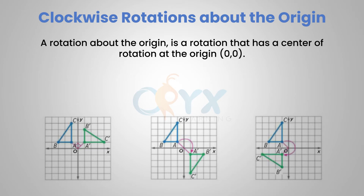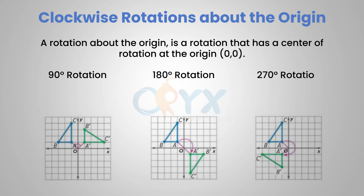When we rotate about the origin, we can rotate 90 degrees, 180 degrees, or 270 degrees. For a 90 degree rotation, the point (x,y) becomes the point (y,-x). You can see that the x and y coordinates are switched, and the x coordinate is negated. Figure ABC was rotated 90 degrees about the origin to form the figure A prime, B prime, C prime.